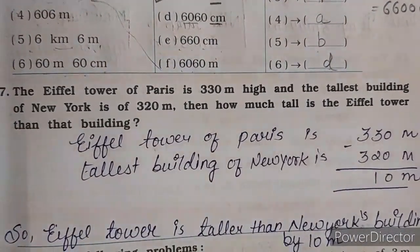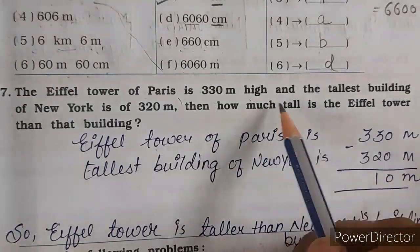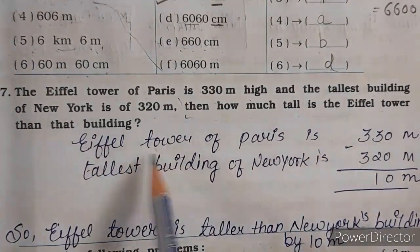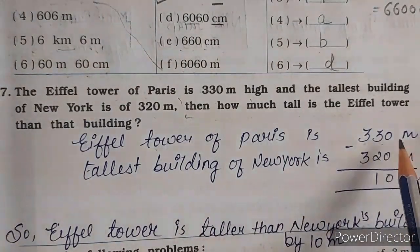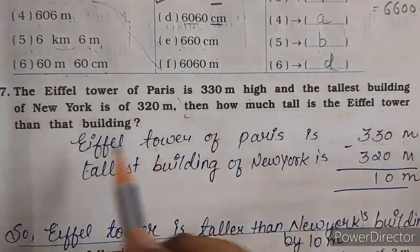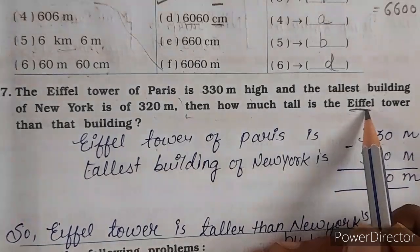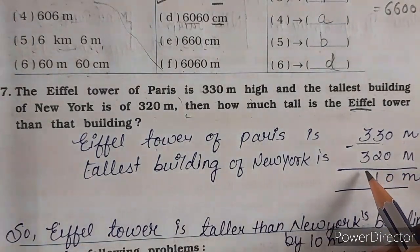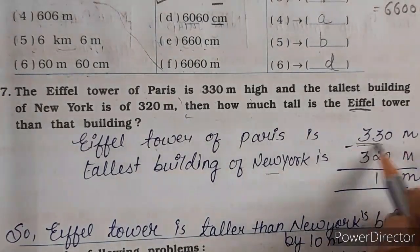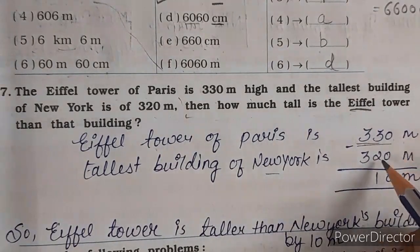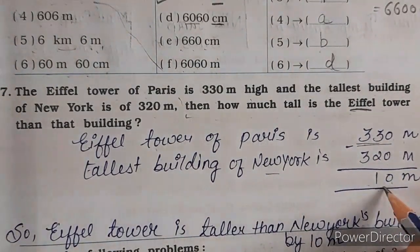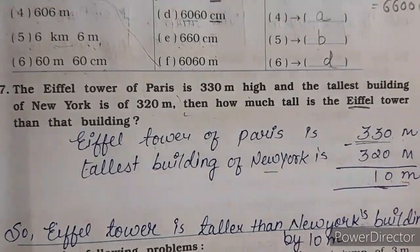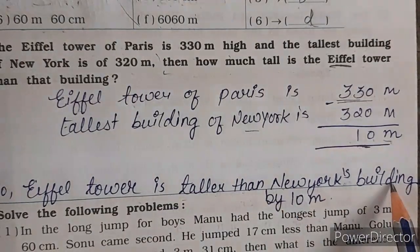Now the next question. Question kya diya gaya hai — the Eiffel Tower of Paris is 330 meter high and the tallest building of New York is 320 meter. Then how much taller is the Eiffel Tower than that building? Eiffel Tower ki jo height hai — 330 meter, and New York tallest building is 320. So the difference: Eiffel Tower height minus New York building — 330 minus 320 equals 10. So Eiffel Tower is taller than New York's building by 10 meter. Unit lagana bilkul nahi bhoolenge.